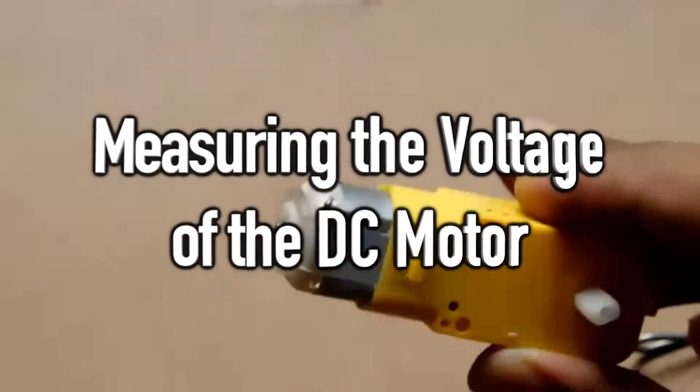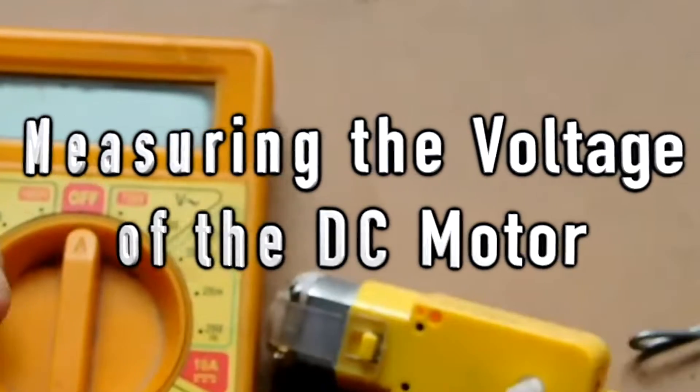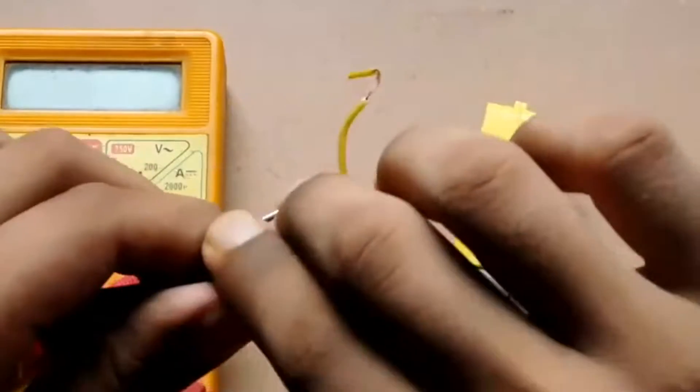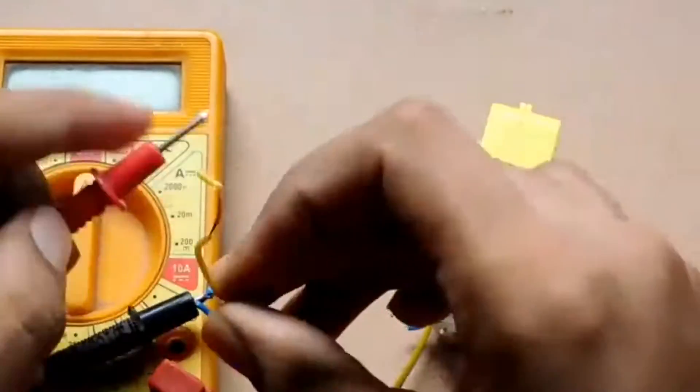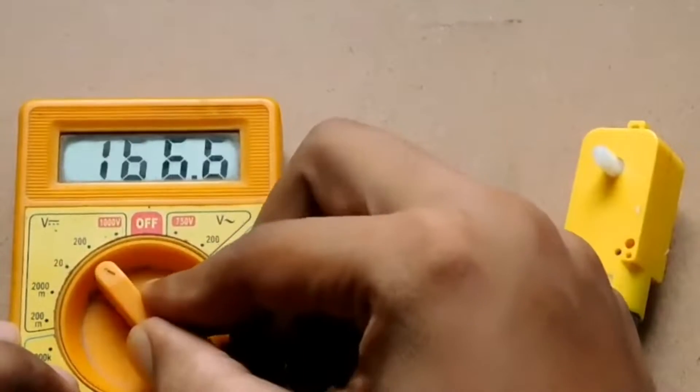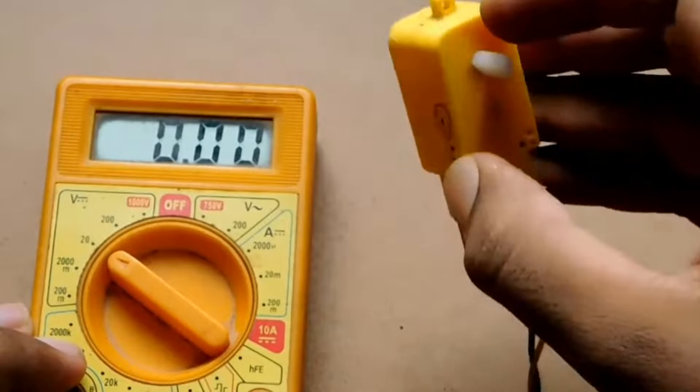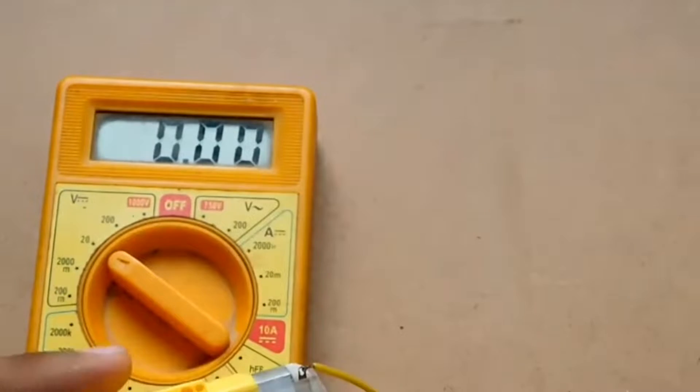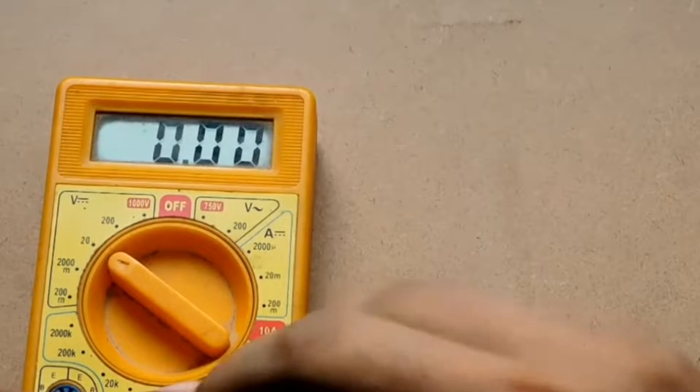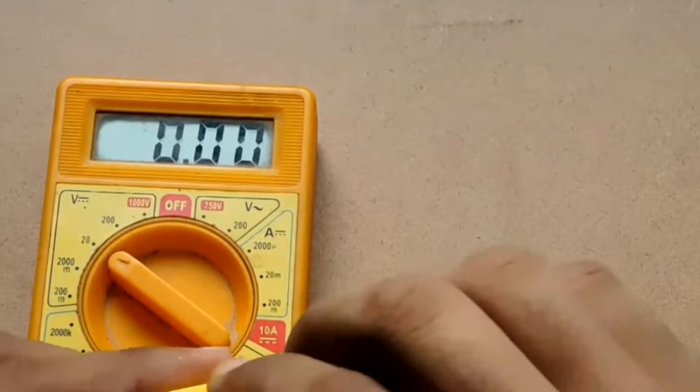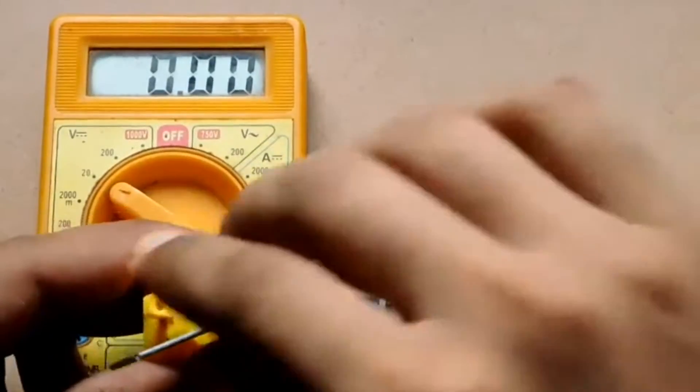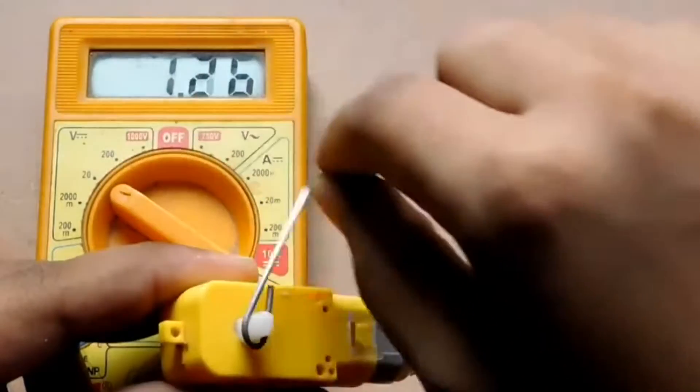We will now measure the voltage of the DC motor by attaching it to a tester. As you have noticed, when the DC motor is spinning, the voltage increases.